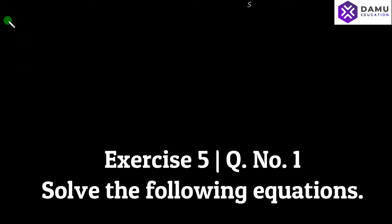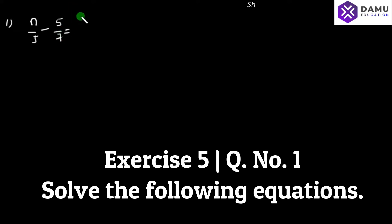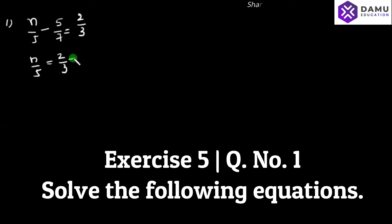So our first question is: n by 5 minus 5 by 7 will be equal to 2 by 3. What we need to calculate is the n value here. Let's take n by 5 will be equal to 2 by 3 plus 5 by 7, shifting the minus 5 by 7 to the right side.